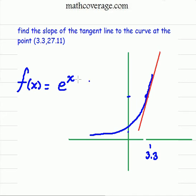And this is supposed to be 27.11 on the y-axis here. But anyway, we're asked to find the slope of the tangent line. And to find the slope of the tangent line on any given curve, the first thing we need to do is take the derivative.